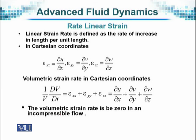Volumetric strain rate in Cartesian coordinates is defined as (1/V)(DV/Dt), where V is the volume. This equals epsilon_XX plus epsilon_YY plus epsilon_ZZ, which is the partial derivative of U with respect to X, plus the partial derivative of V with respect to Y, plus the partial derivative of W with respect to Z.